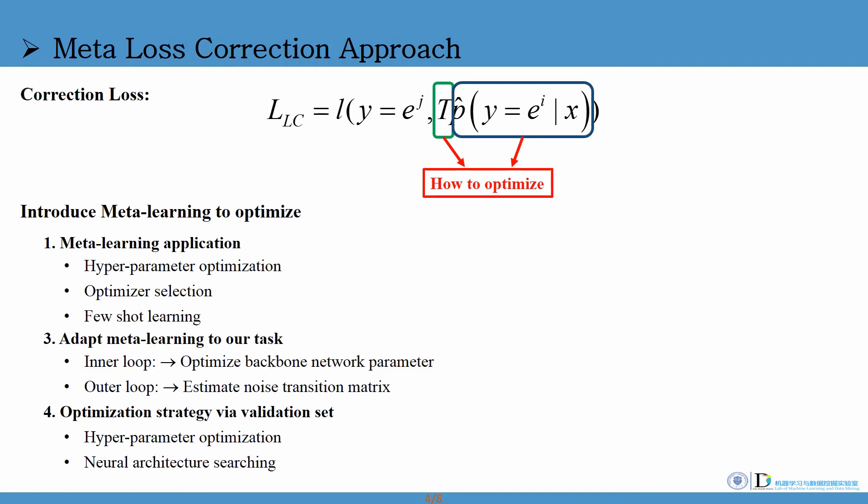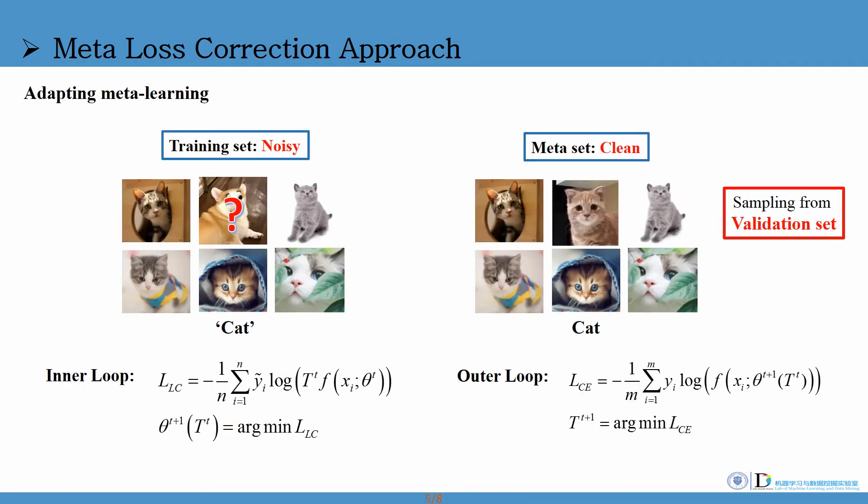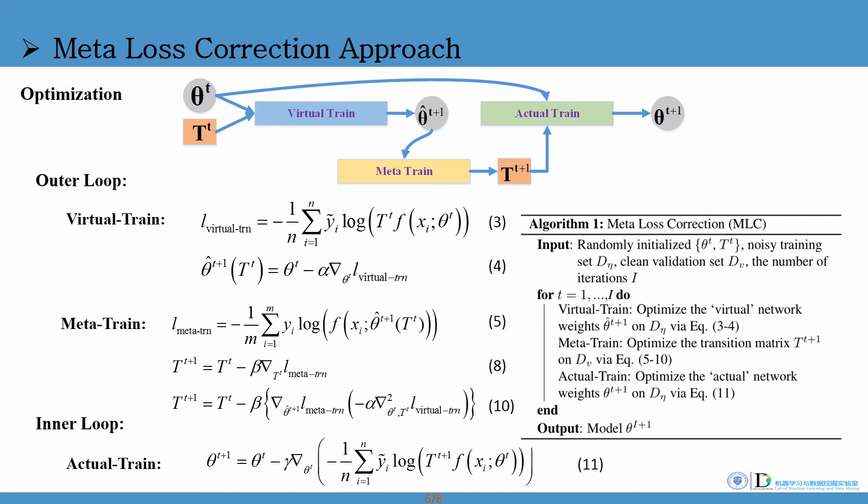We introduce meta-learning to optimize T and network iteratively. Inner loop performs on noisy training set, outer loop performs on clean validation set. With updated parameters in previous step, we update network on noisy dataset using LC loss via SGD in virtual train.